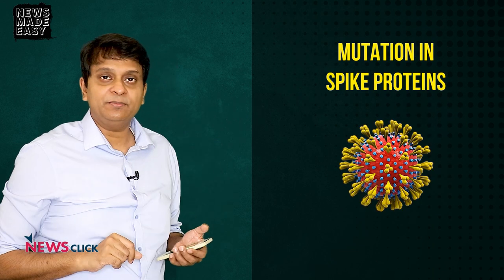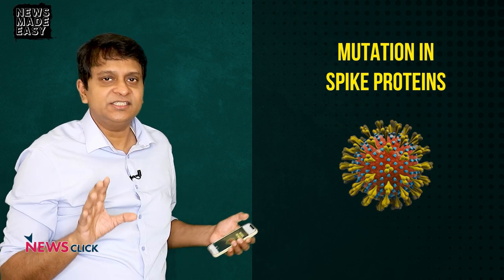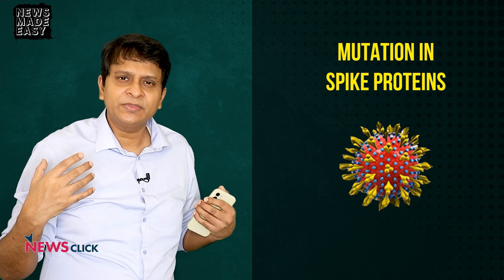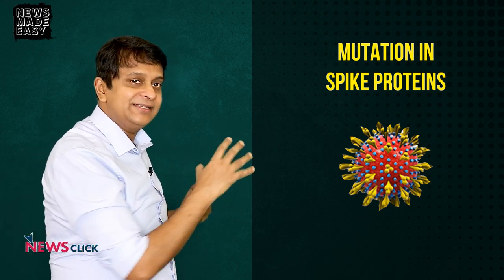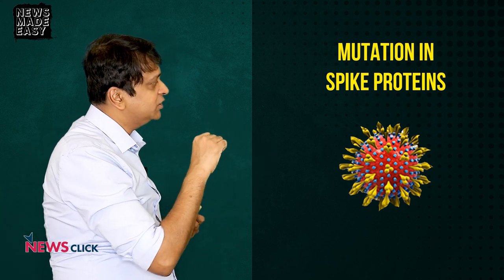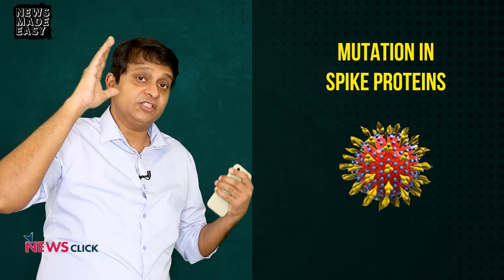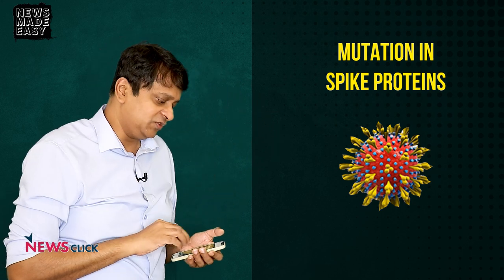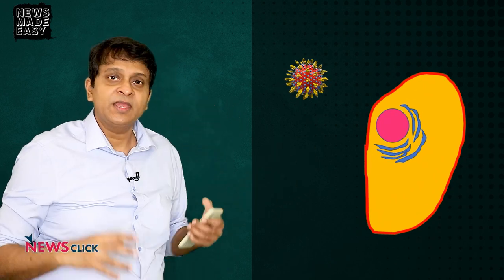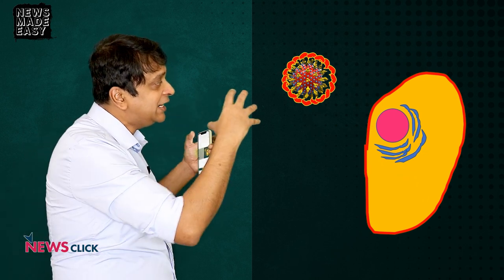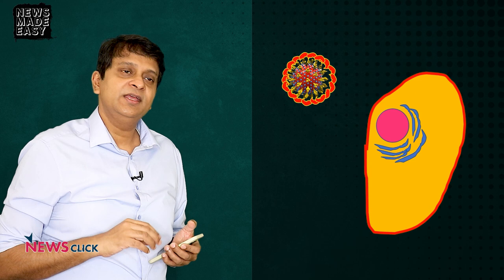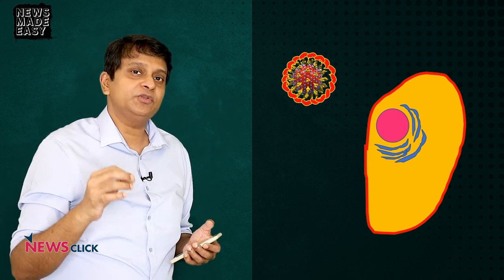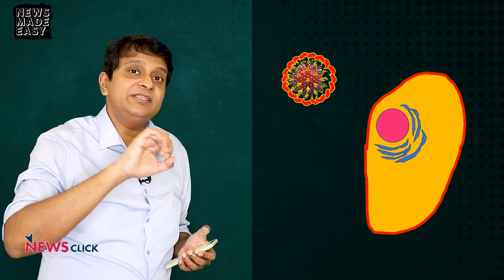But what happens if there are mutations in these spike proteins? This is a visual representation — not a scientific one — just to help you understand. If mutations in the spike proteins take place, let's assume for visualization that the shape of those spikes has changed. When this new mutated coronavirus comes, the antibodies in our body are no longer able to recognize these spikes because they've changed — some have been deleted, some have become different.